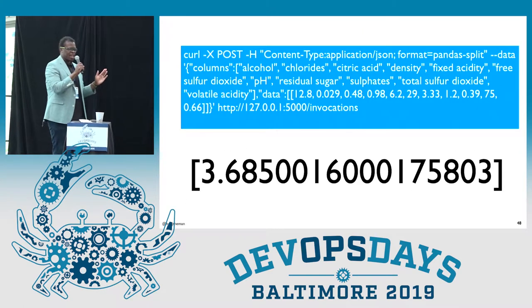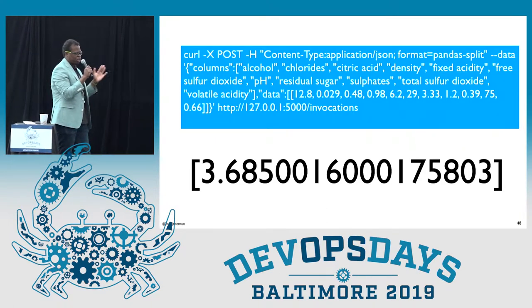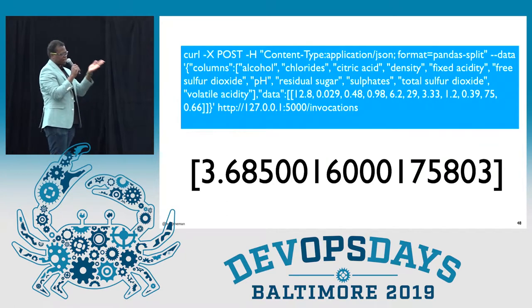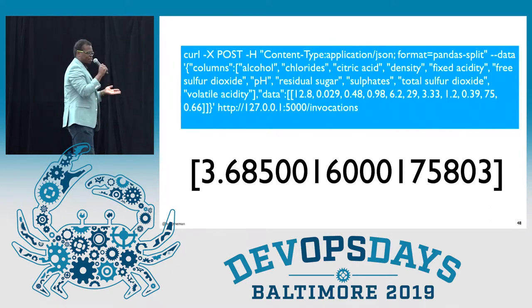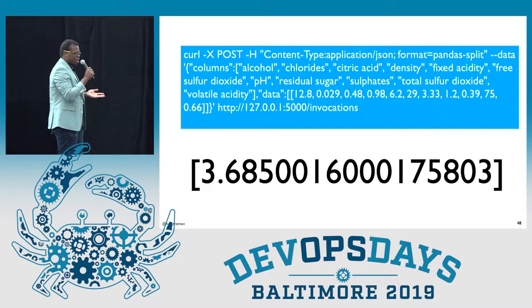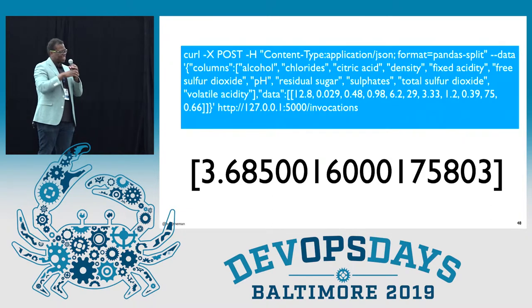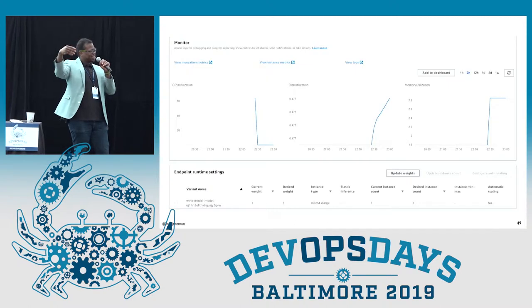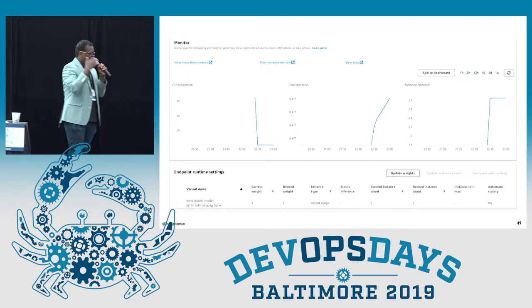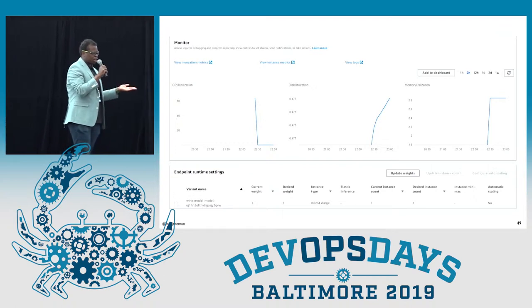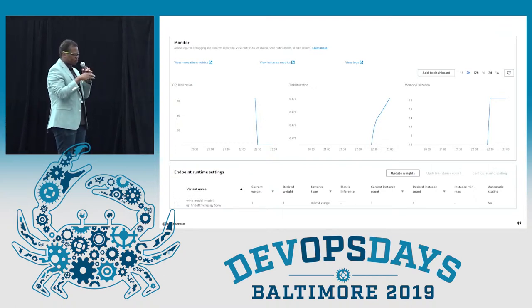When you deploy to Amazon SageMaker locally, it gives you an endpoint that you can send a curl command to. Through this curl command, I'm sending 12 different features and it gives me a quality of wine — 3.6 based on all those features. So probably some low quality wine. And it gives you some visibility on what's happening: how many times it's been invoked, CPU utilization. But there's not enough detail to really dive into how your model is performing.